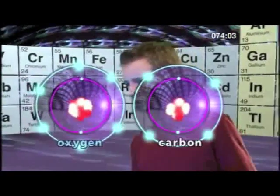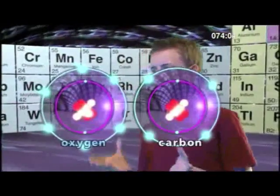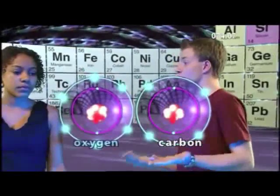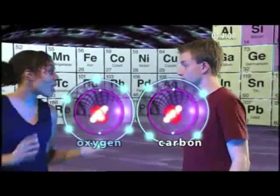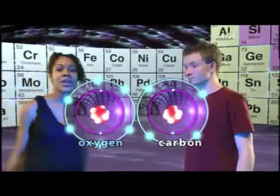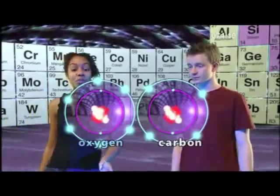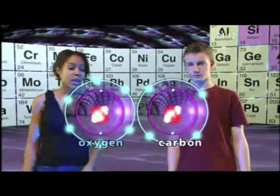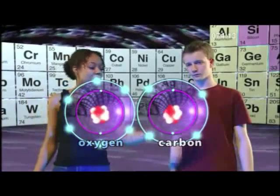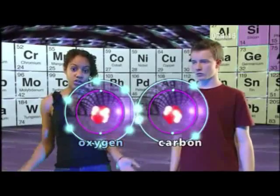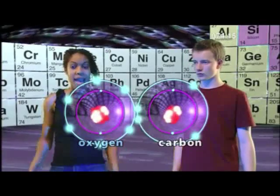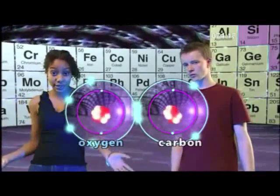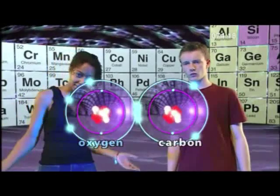The oxygen atom already has six outer electrons, so it needs another two to make a full shell. In covalent bonding, the carbon atom shares two of its electrons with the oxygen atom, and the oxygen atom shares two of its electrons with the carbon atom.